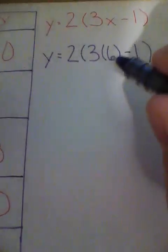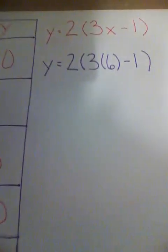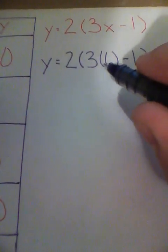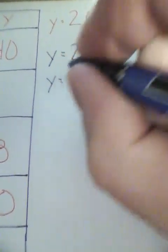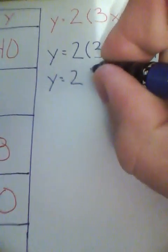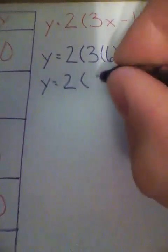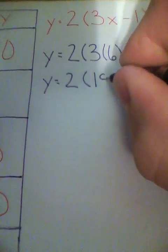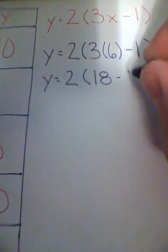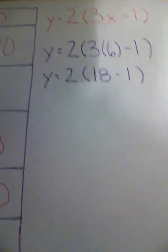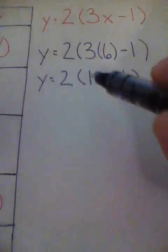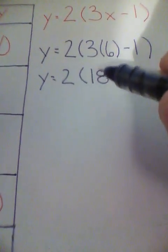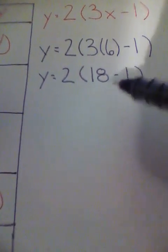I'm now going to look what's inside the parentheses first. I see that I can multiply 3 times 6. So I'm going to bring everything I don't use down. It's still Y equals 2 times, well 3 times 6 is 18, so I have 18 minus 1 inside the parentheses.